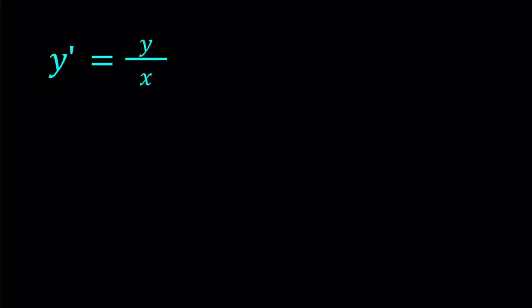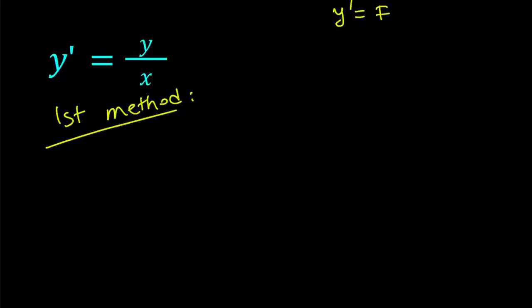For the first method I'm going to use substitution, which is basically typical for these kinds of equations. We've done similar equations before where you can write y prime as a function of x over y or y over x. In this case, it is a function of x over y. If you can do this, then the first method can always be applied — it involves changing to a different variable.